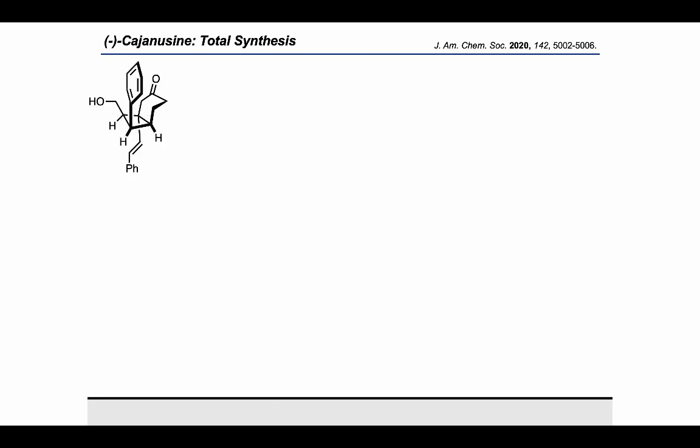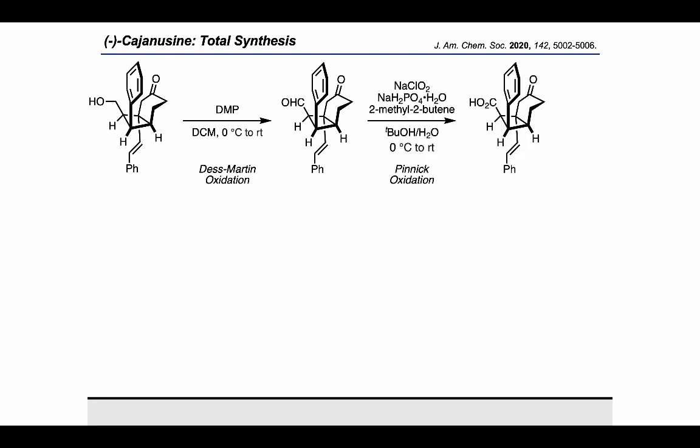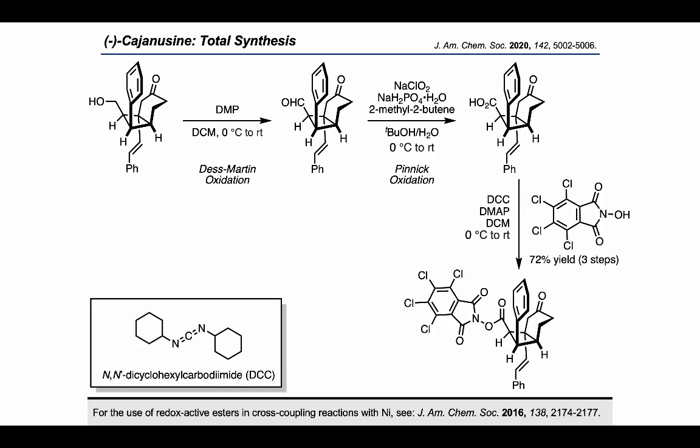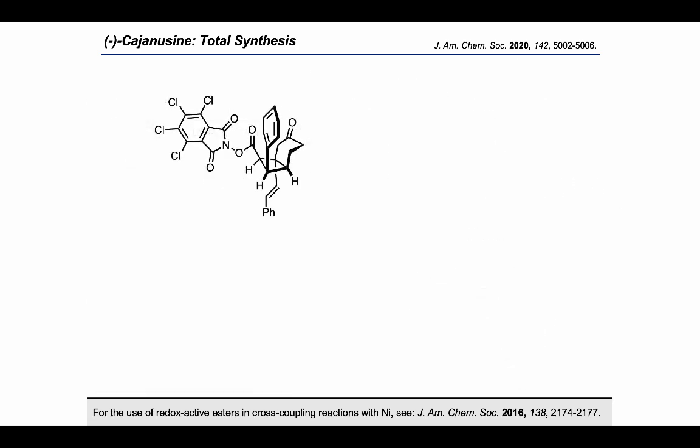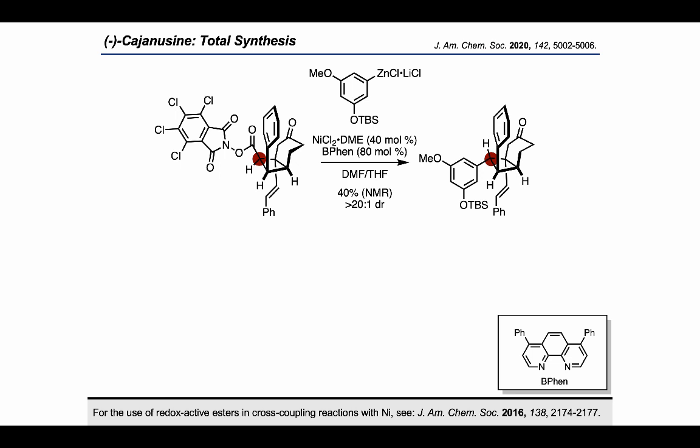Moving on, the authors used the Dess–Martin oxidation to bring the primary alcohol up to the aldehyde, and Pinnick oxidation to bring it up to the carboxylic acid, which was then esterified with a redox-active ester. The virtue of this type of ester is that it could be engaged in the next step to carry out a decarboxylative coupling with nickel and an aryl-zinc coupling partner.